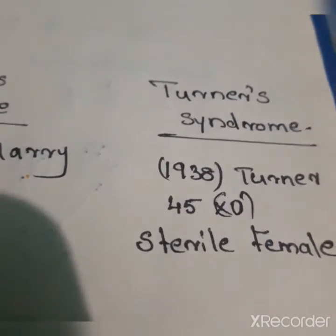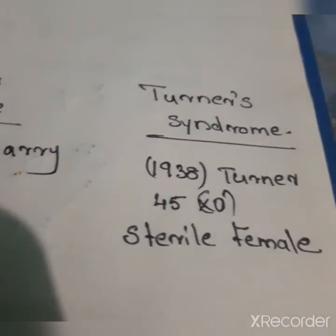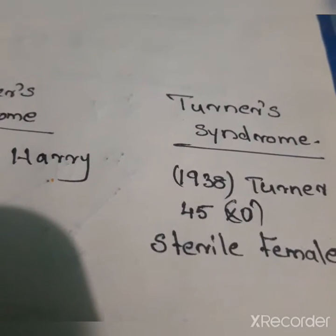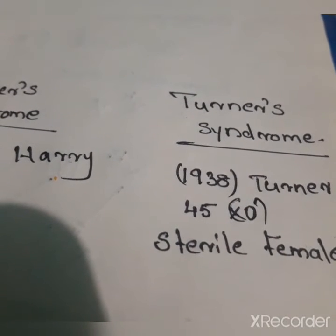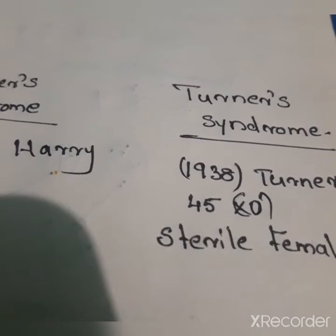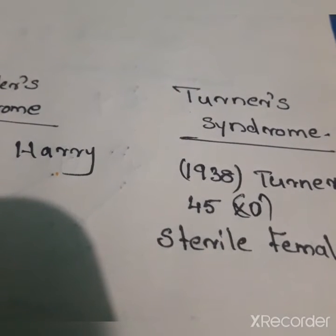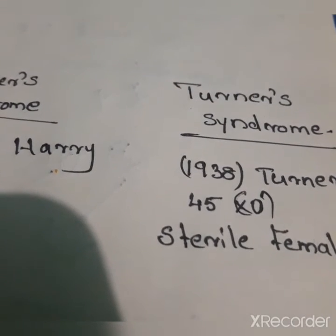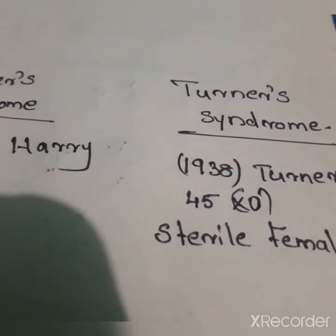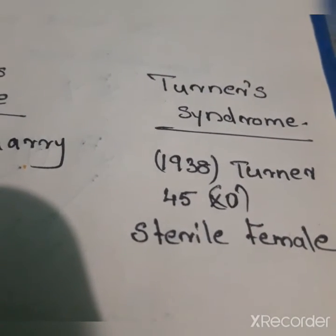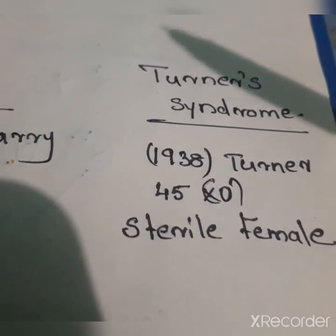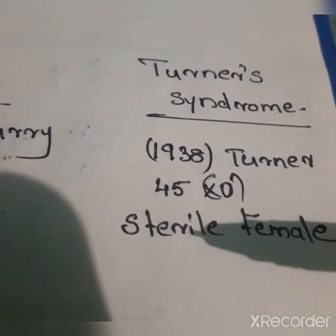The affected person is a sterile female. Such females are sterile as the ovaries are rudimentary, and they lack other secondary sexual characters. Turner's syndrome affects females, making them sterile.